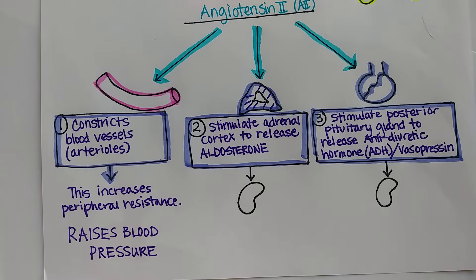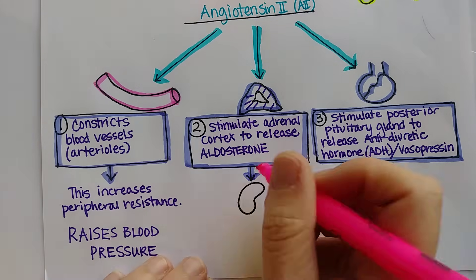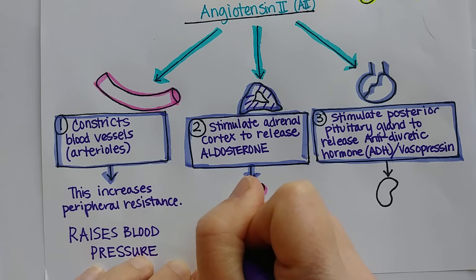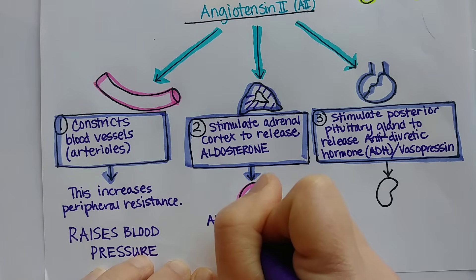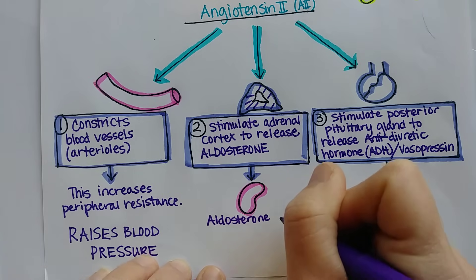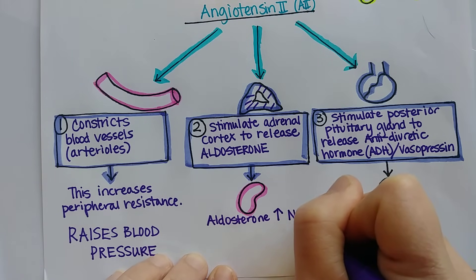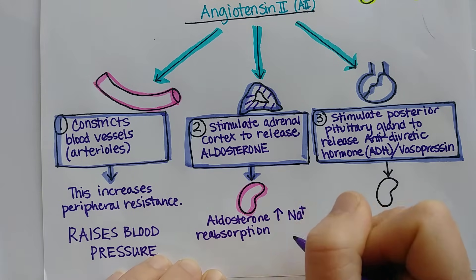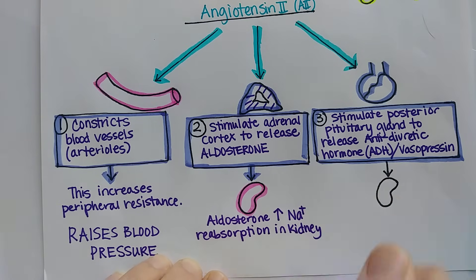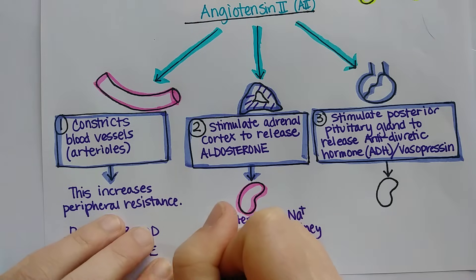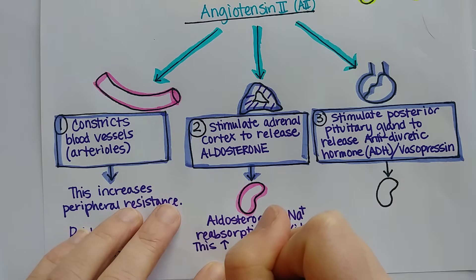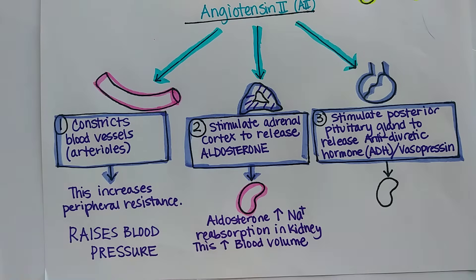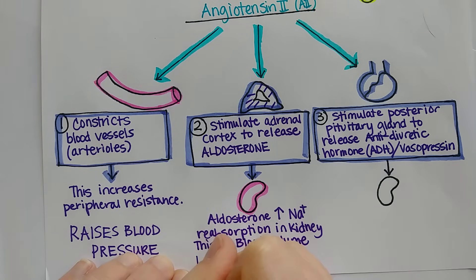Now what about at the kidney? Not surprisingly, it's going to have a similar end result of raising blood pressure. Aldosterone causes the kidney to reabsorb more salt — it increases sodium reabsorption in the kidney. And what that does is increase blood volume, and that increases peripheral resistance too — so this raises blood pressure.